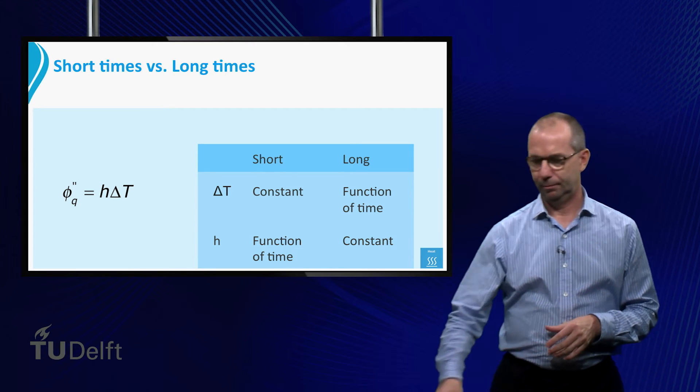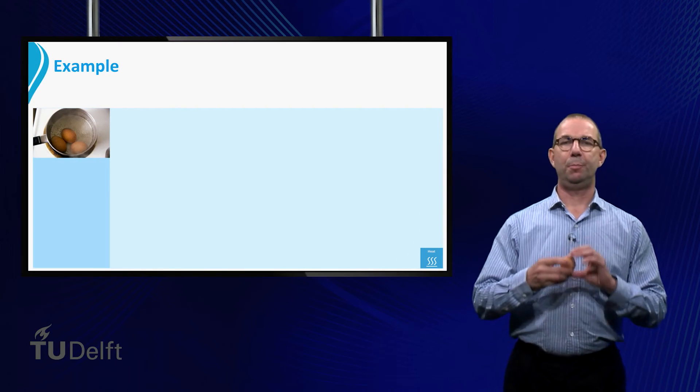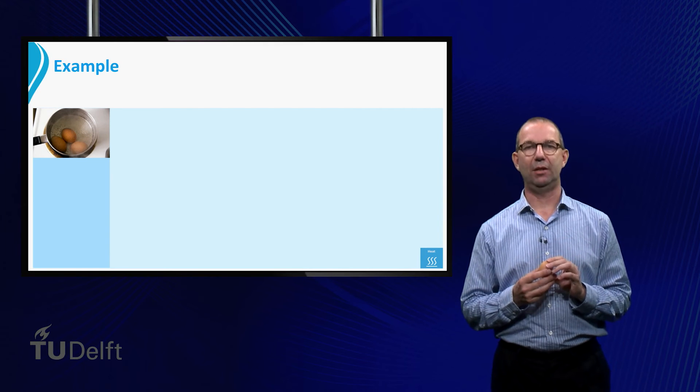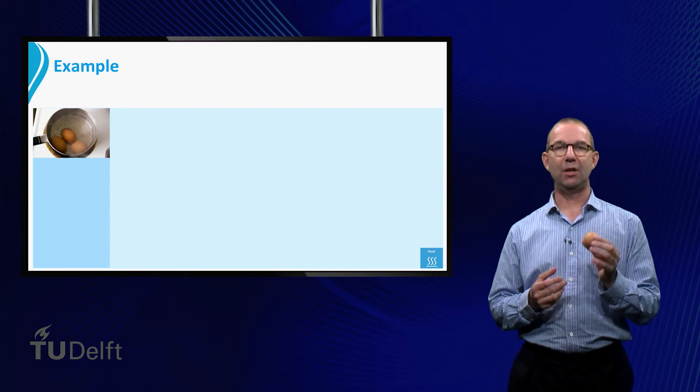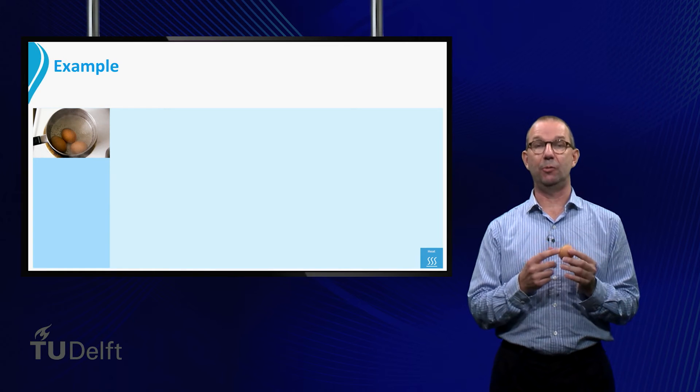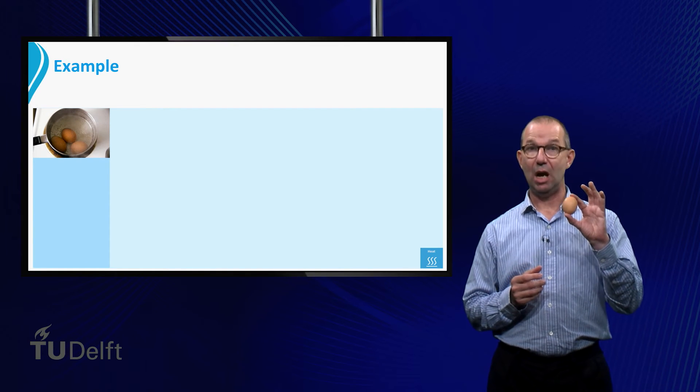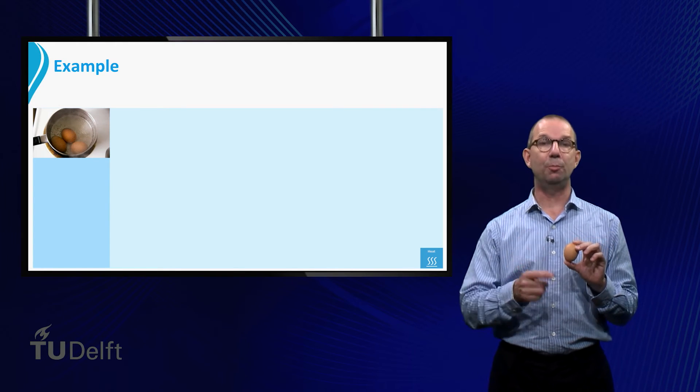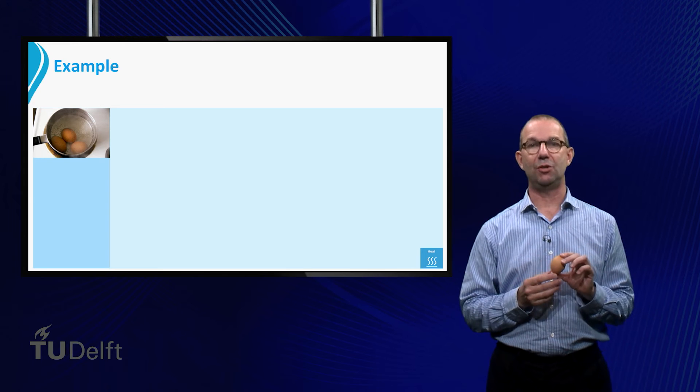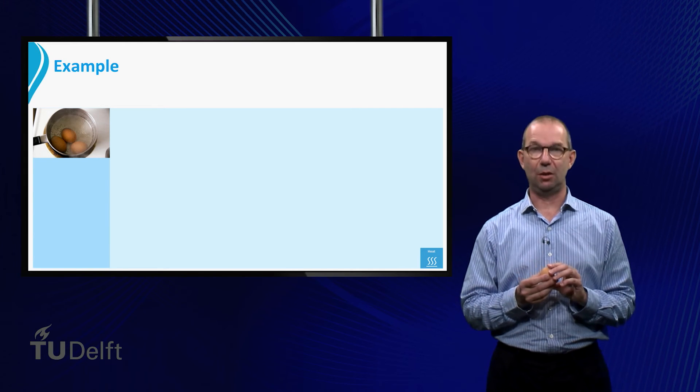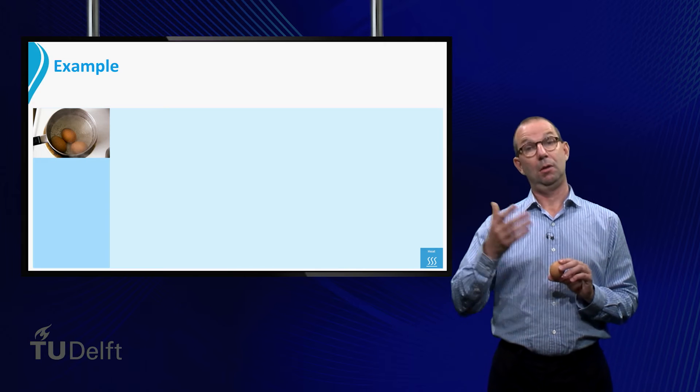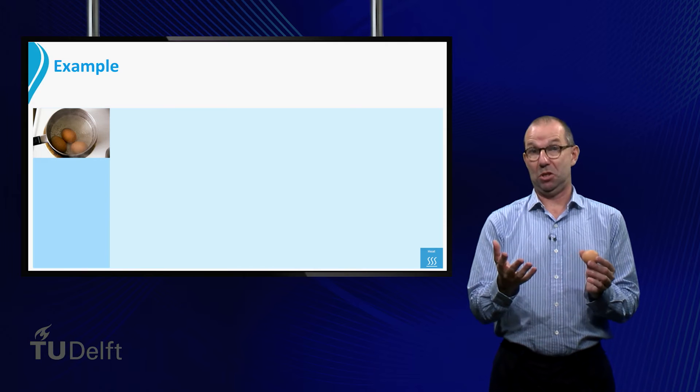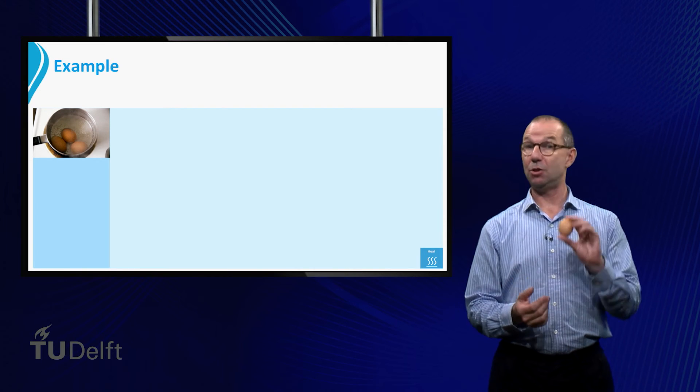Let's do an example. Suppose you want to boil an egg and have it hard on the inside. Egg solidifies at a temperature of 65 degrees. Thus, the question is, how long should you boil an egg if its temperature everywhere needs to be at least 65 degrees? Clearly this is an unsteady heat conduction question. Moreover, it is long times as the original temperature in the egg, which is room temperature in our example, is no longer present in the egg.